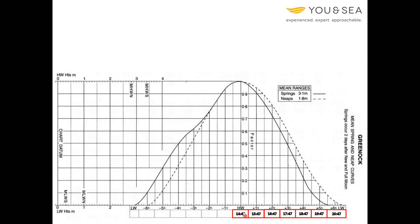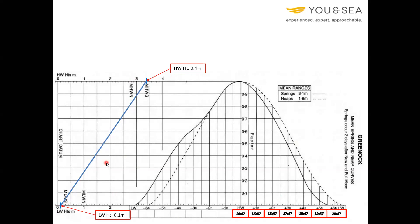Information number one: 1447. Information number two: high water height of 3.4 metres — put that up at the top with a half-minute line as a marker. Same for low water height: 0.1 metres. We pick the next low water height after high water. Draw a line across — this becomes our reference line between high water and low water. The tidal curve is now complete; there's no other information I need to add.